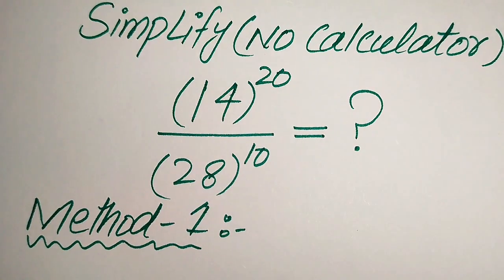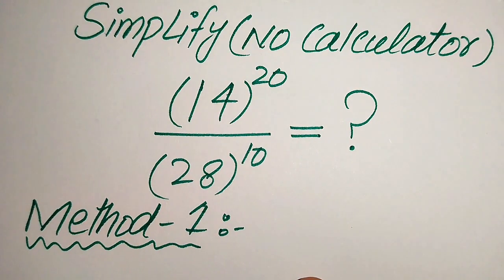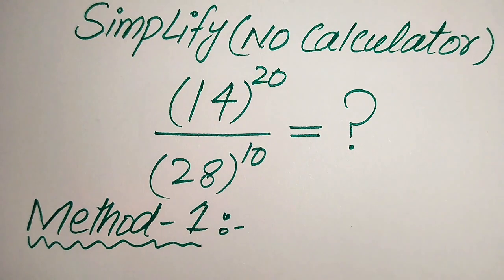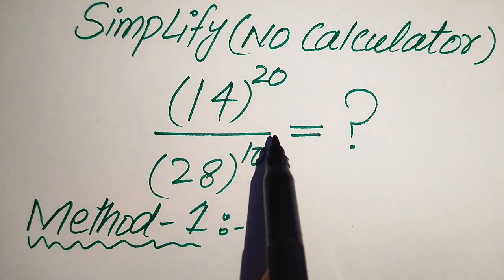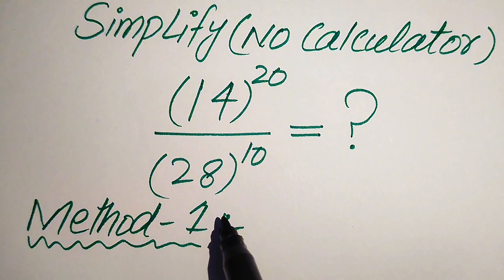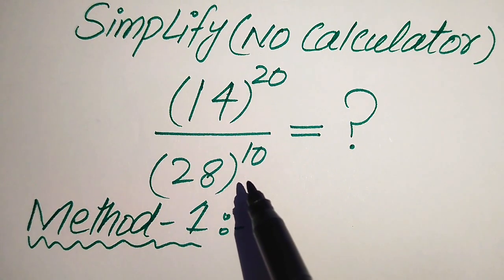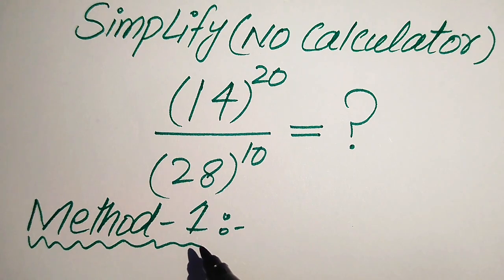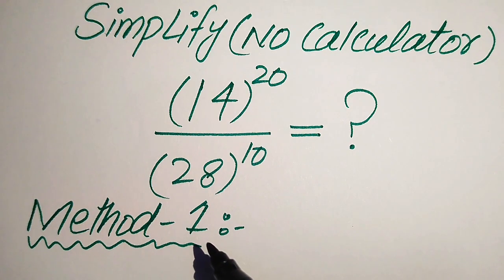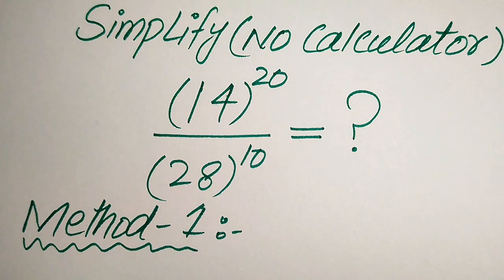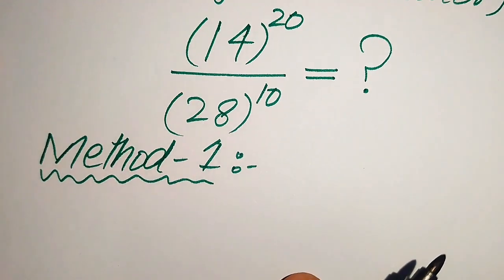Hello everyone, today I want to show you how to simplify this algebraic expression without using a calculator: 14 to the power of 20 divided by 28 to the power of 10, and write it in its lowest form. I hope you like this method, but if you have any other method in mind, please don't hesitate to write it in the comment section. I will solve this problem using two methods.